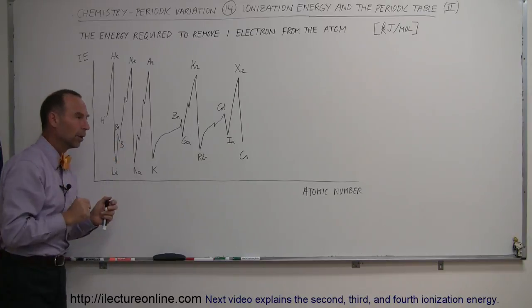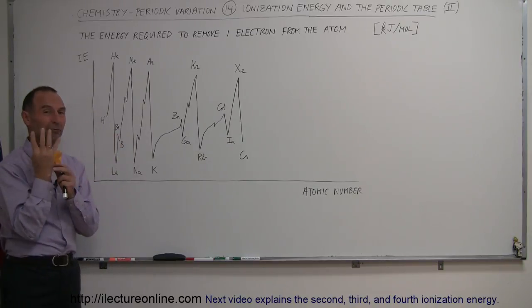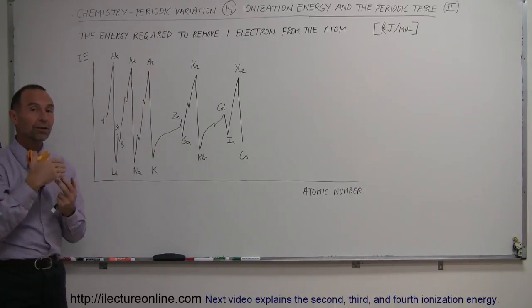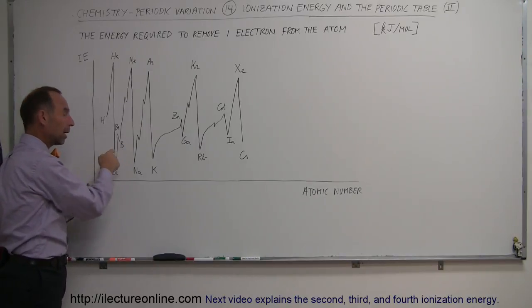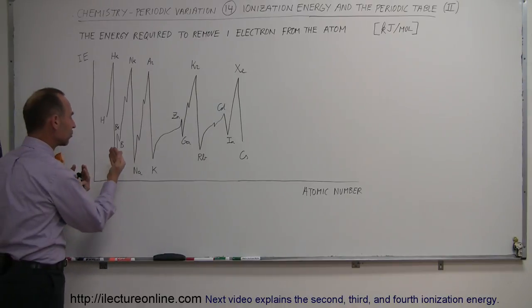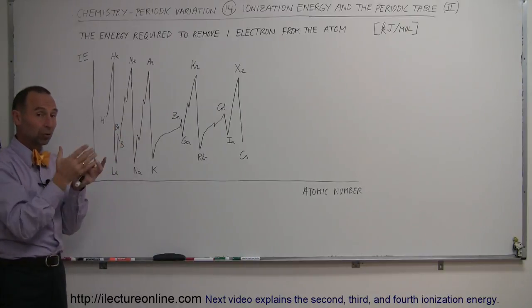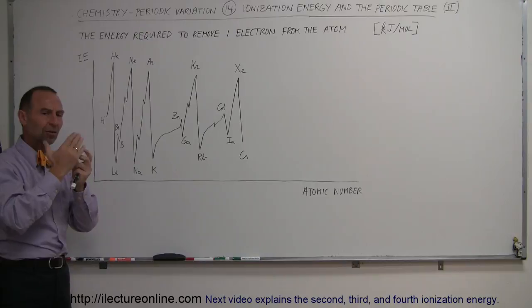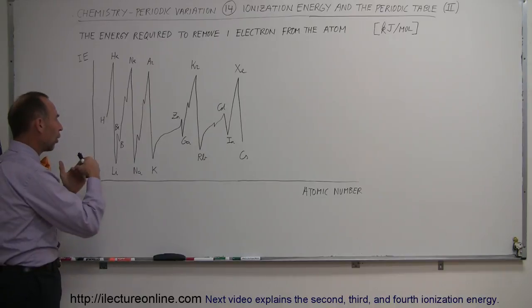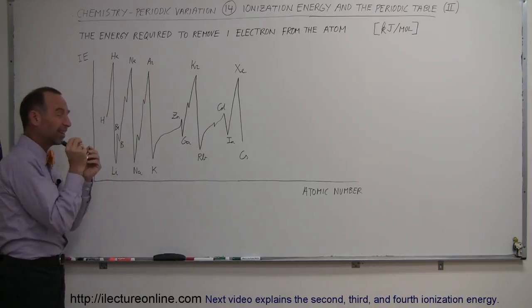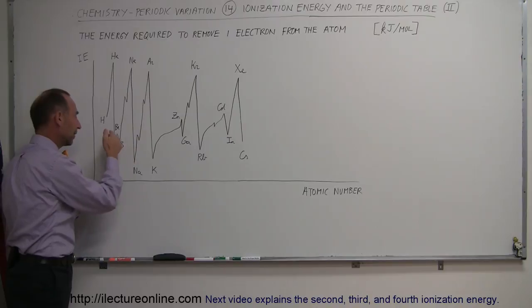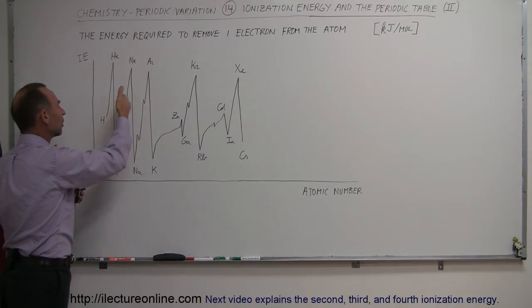What happens going from beryllium to boron? By the time we get to beryllium, we have four electrons — two in the innermost S-shell and two in the next energy level's S-shell, which is now completely filled. The fifth electron for boron goes into the P-orbital, all by itself. That electron is easier to remove than one from a filled S-orbital, because filled orbitals represent a lower energy state, making them harder to remove from. A single electron in the P-orbital is a higher energy state and easier to move, so the ionization energy for boron drops.